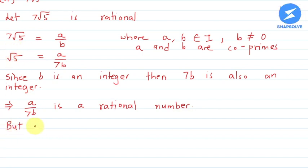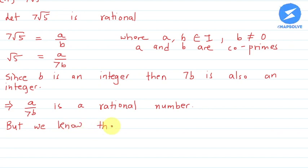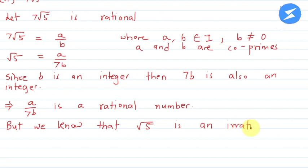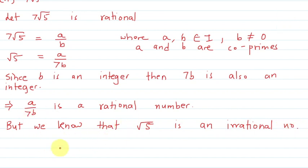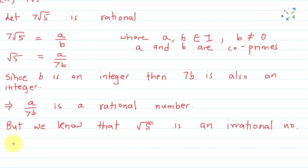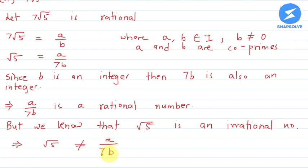But we already know that root 5 is an irrational number. We know that an irrational number cannot be equal to a rational number. So root 5 cannot be equal to a upon 7b. This implies that root 5 is not equal to a upon 7b.